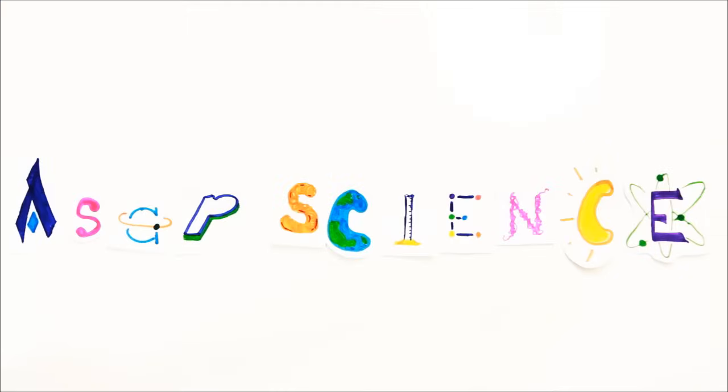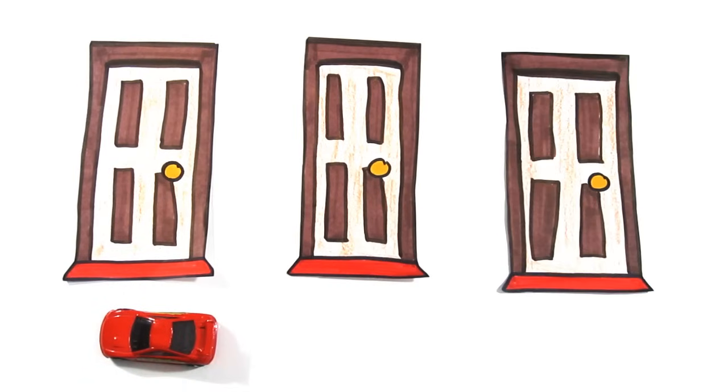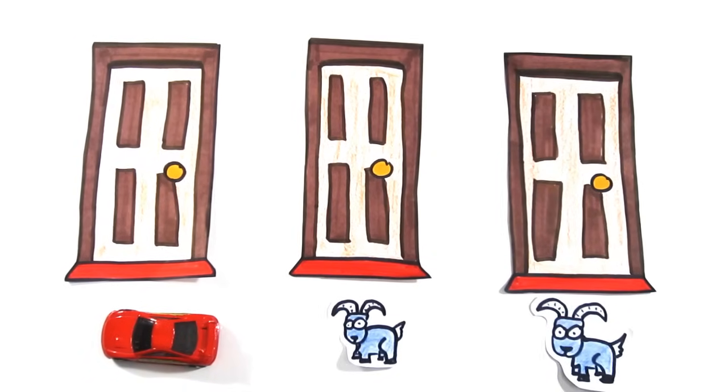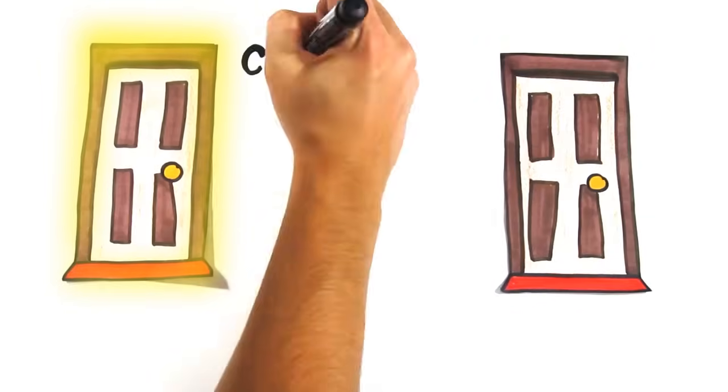So, you've made it to the last round of a TV game show and have the chance to win a brand new car. It sits behind one of these three doors, but the other two have a sad little goat behind them. You make your choice, and the host decides to reveal where one of the goats is. He then offers you a chance to change your door. Do you do it?